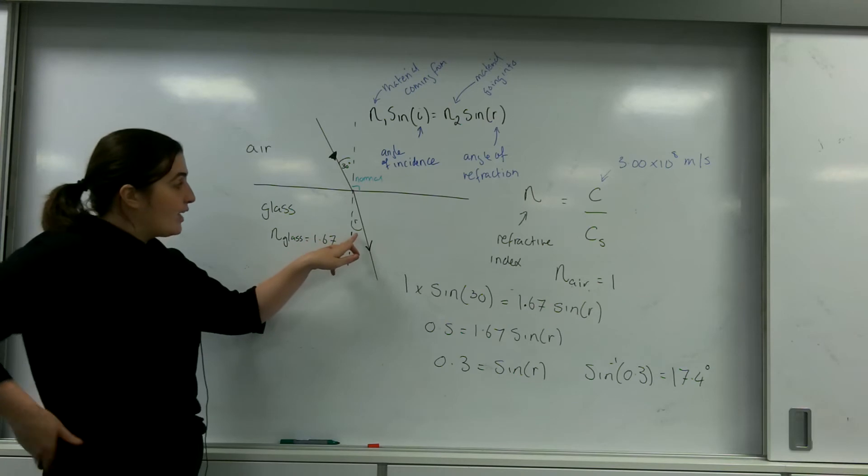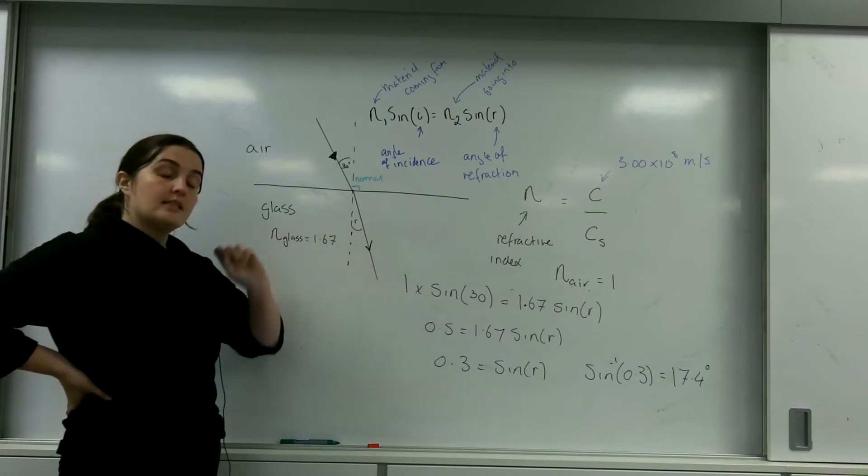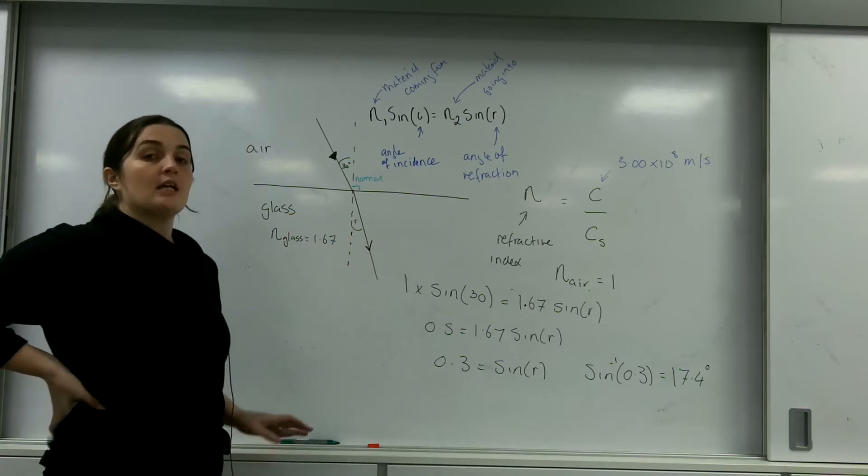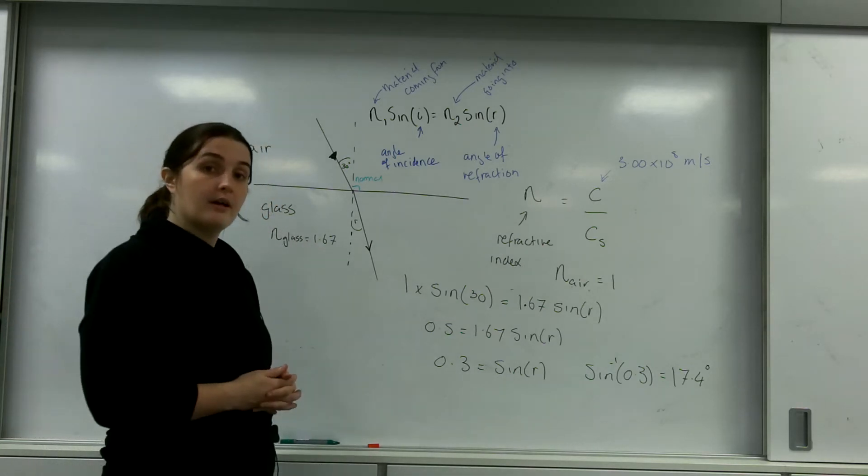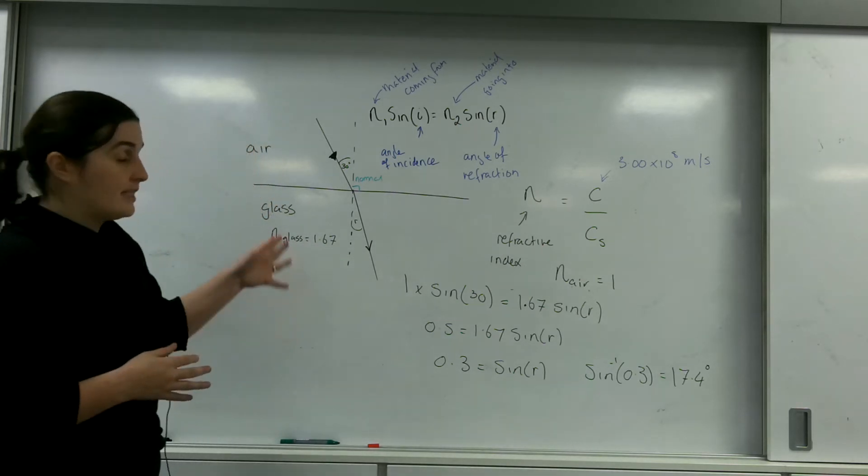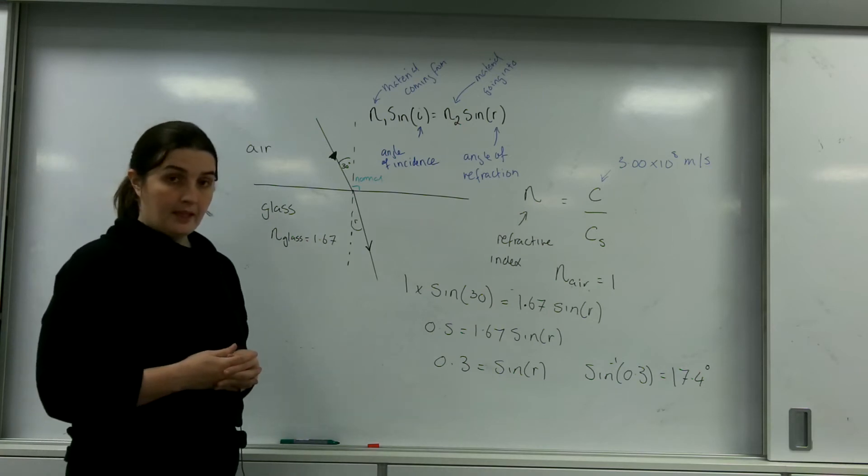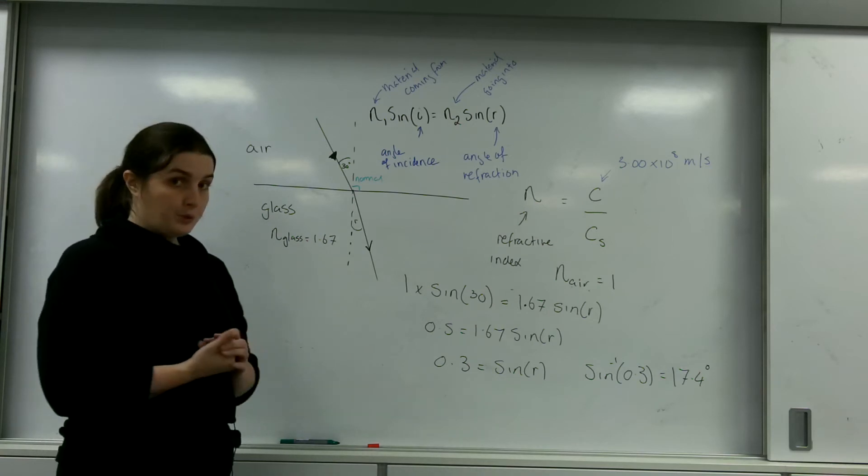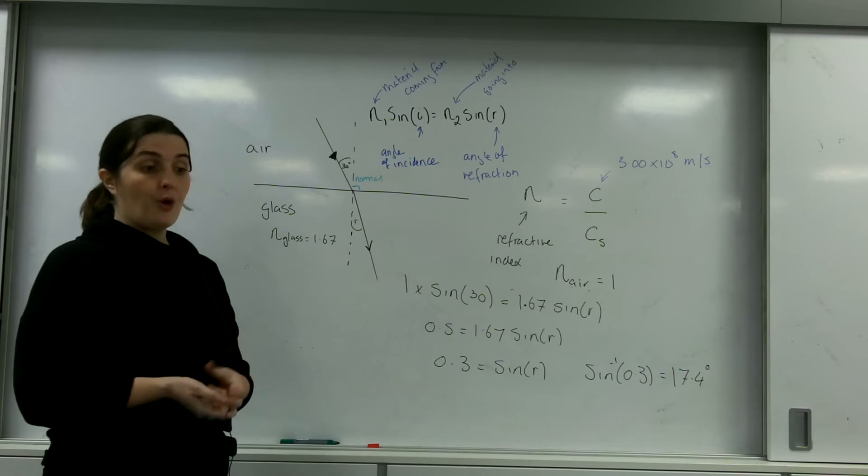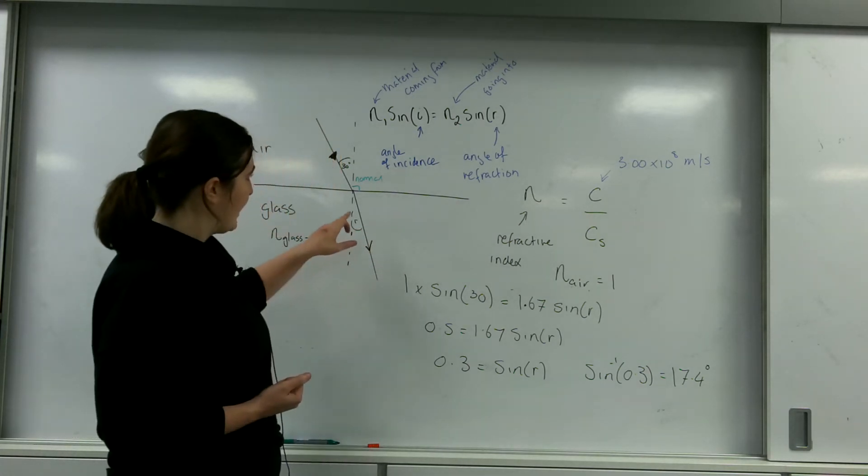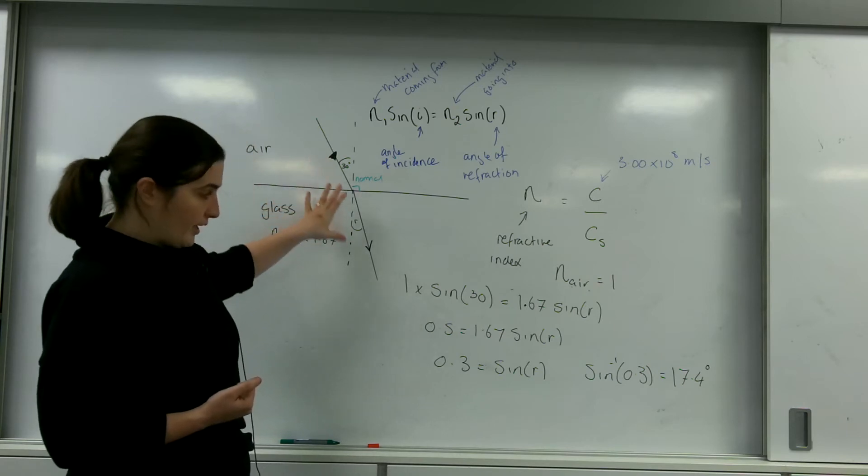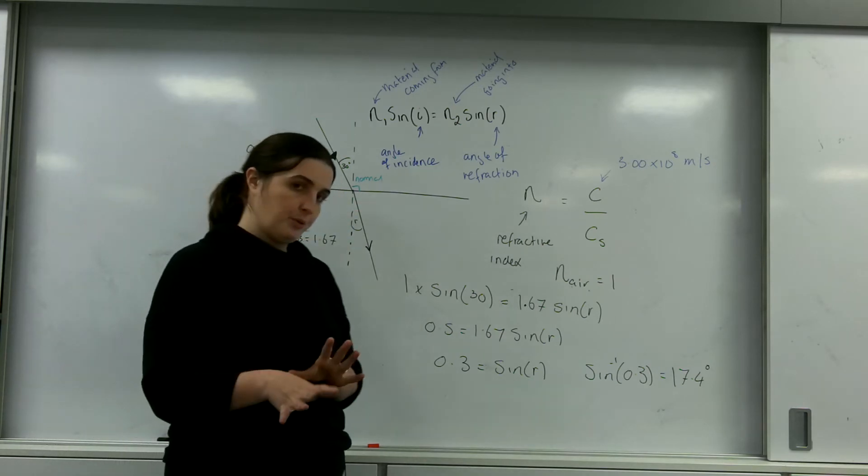So this angle of refraction is 17.4 degrees because it's turning closer to this normal. This is Snell's law. Now this can be used in all sorts of ways. Later on with total internal reflection, this is a very special case when this angle of refraction happens to be 90 degrees. And we'll talk about that in a little bit.